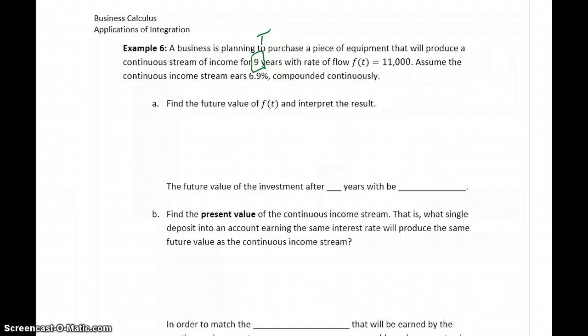We can find the future value of this investment, of this continuous income stream with its investment, by evaluating e to the 0.069 times nine. So this is e to the r times capital T, times the integral from 0 to 9 of our function f of t, that continuous income stream.